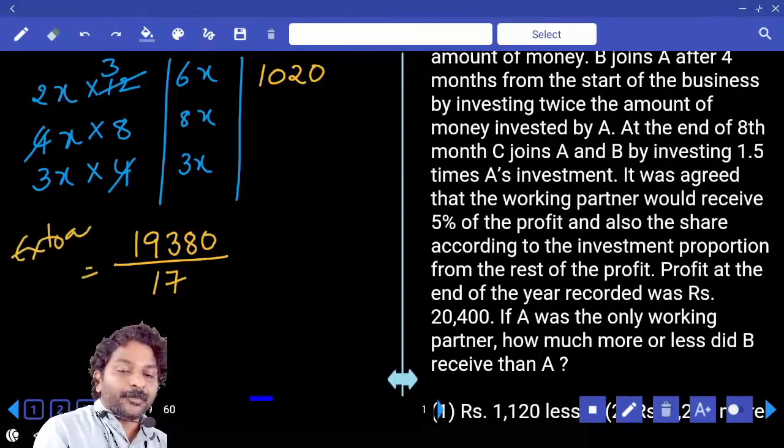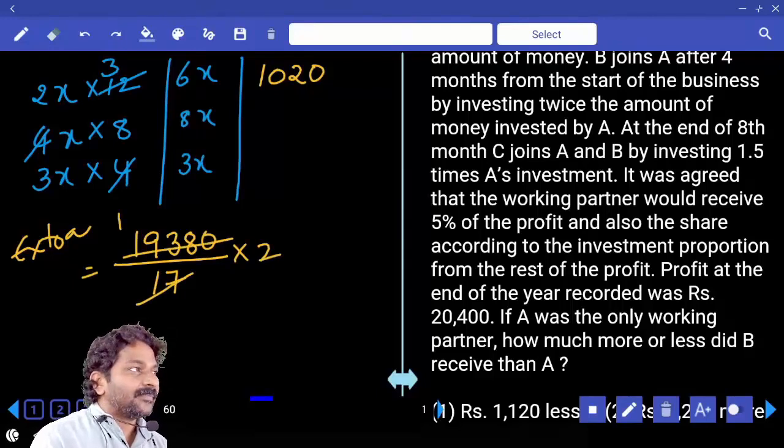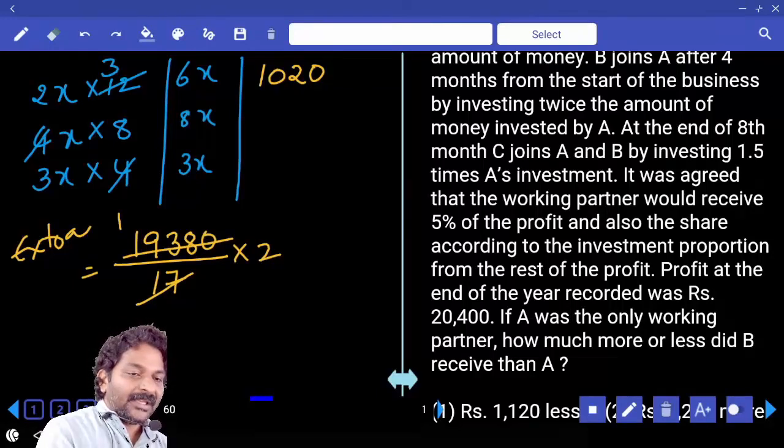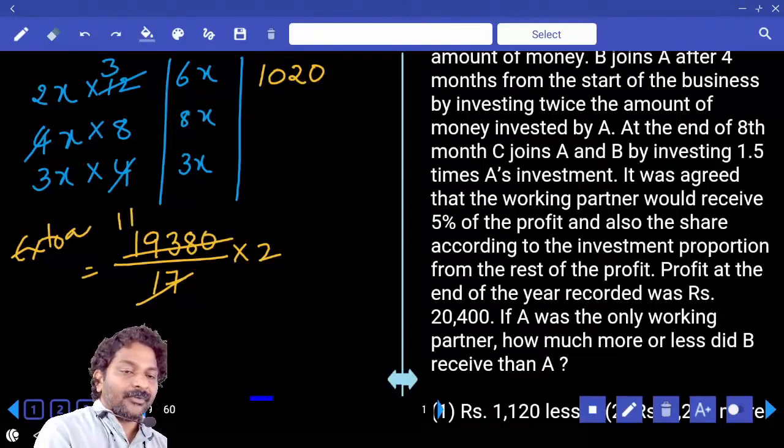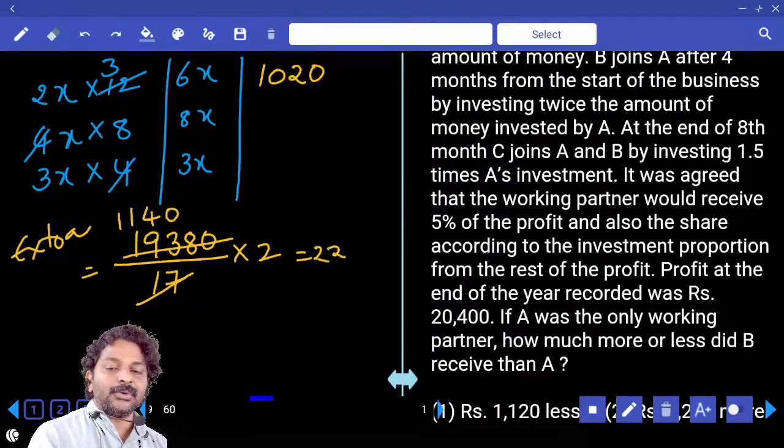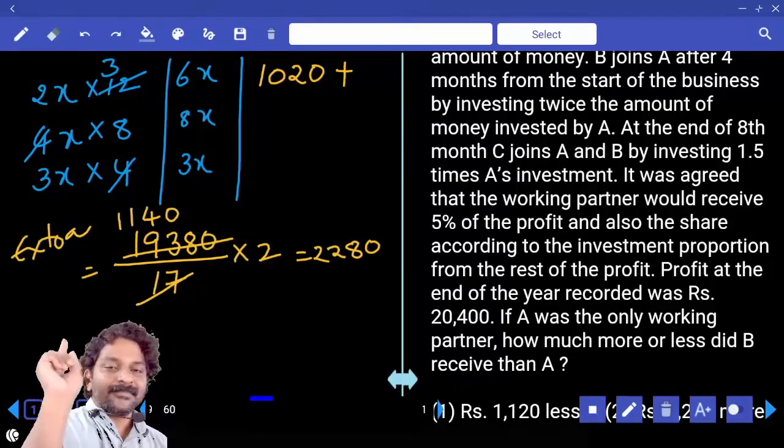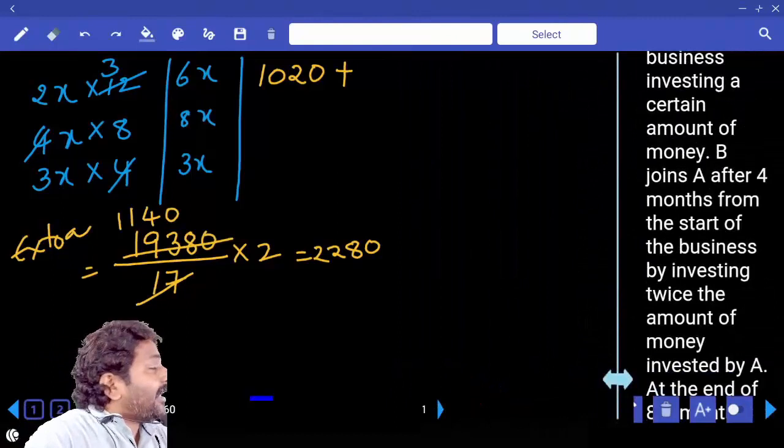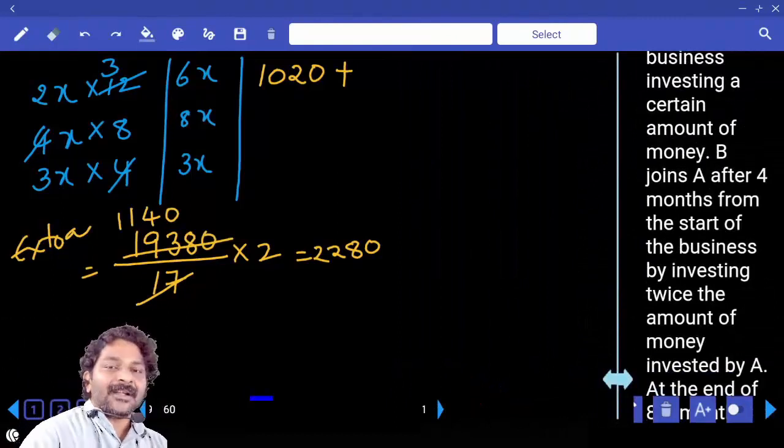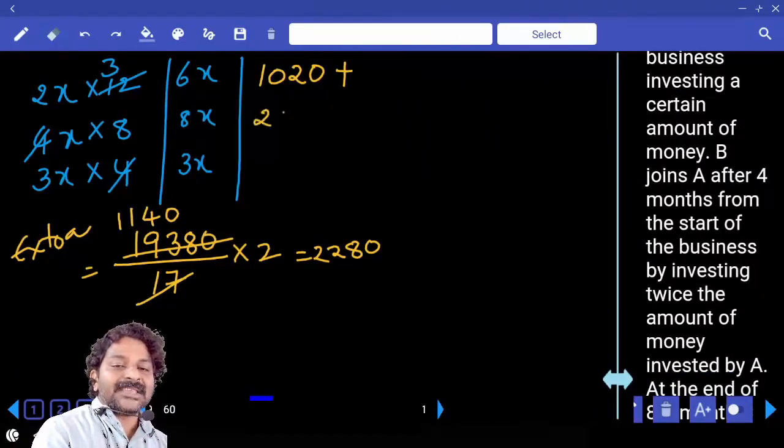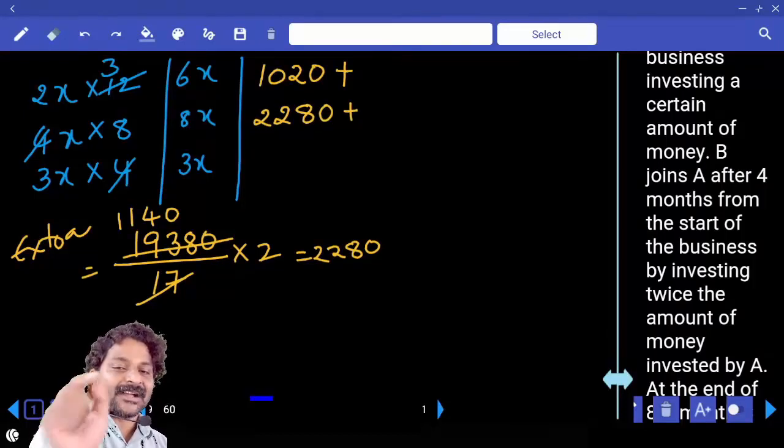That is 19,380 divided by 17 times 2. Once 23, again once 40, that is 2,280. That means A is getting 1,020 extra. B is getting 2,280 extra. Correct?